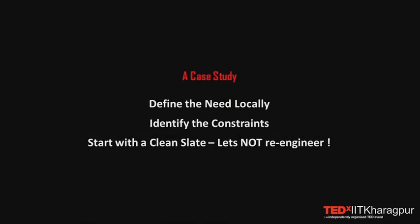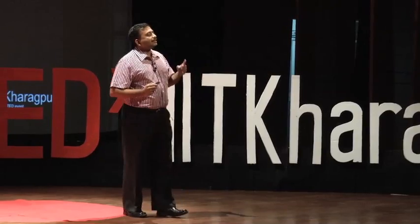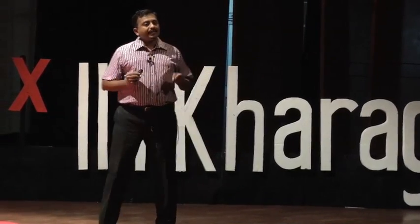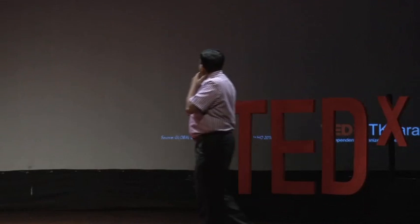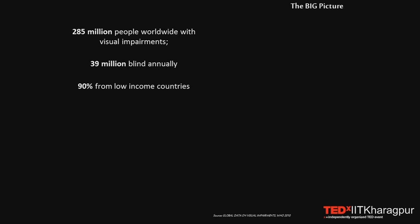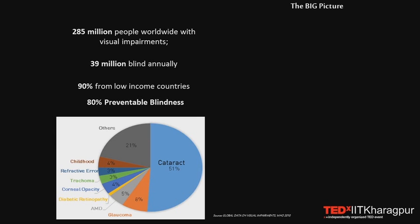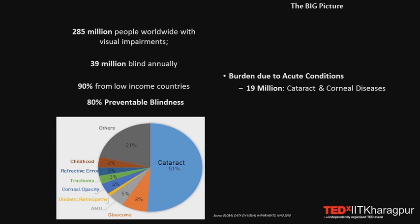Here's a case study. We define the problem locally, define the constraints, and - critically - we are not going to re-engineer something already available in the West to make it cheaper. Instead, we ask: if we didn't know how it was developed in the West, how would we do this in India? Throughout the world, more than 285 million people are at risk for visual impairments. Sadly, 39 million go blind annually, 90 percent of them in low-income countries, and 80 percent of this blindness is actually preventable. In India, around 19 to 20 million people are at risk for acute diseases like cataract or corneal diseases.